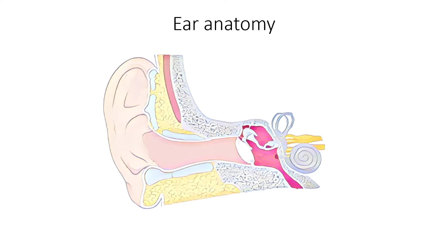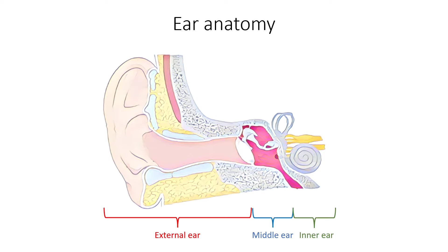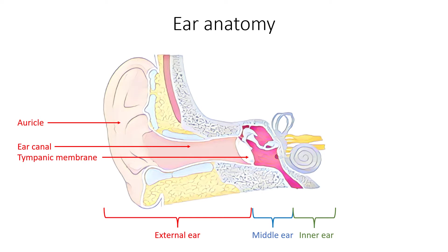Ear is divided into three main areas: external ear, middle ear, and inner ear. External ear is composed of auricle, a C-shaped large structure made up of cartilage, ear canal, also known as external auditory canal, and tympanic membrane, also known as eardrum.